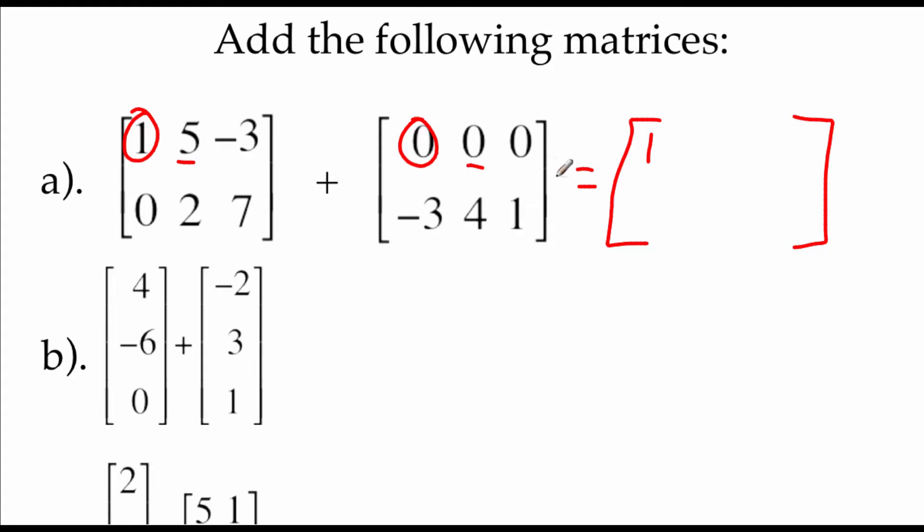We're just going to keep matching up corresponding pieces. So if we look at 5 and 0, add those together, we get 5. Negative 3 and 0, we get negative 3. Moving on to the second row, 0 and negative 3 is negative 3. 2 and 4 will give us 6. And 7 plus 1 is 8. So we get this brand new 2 by 3 matrix.